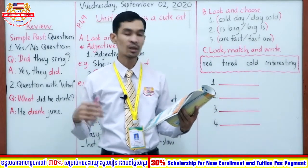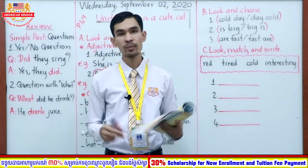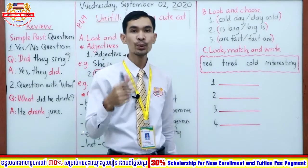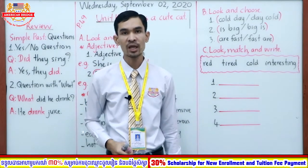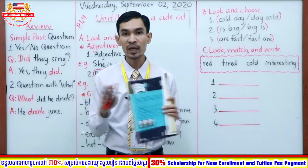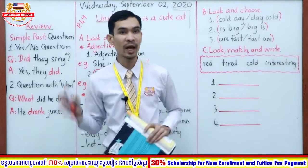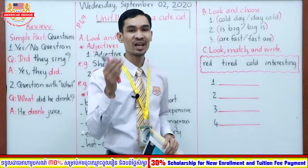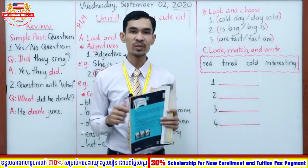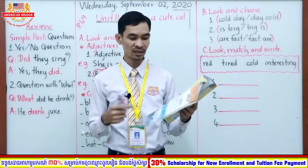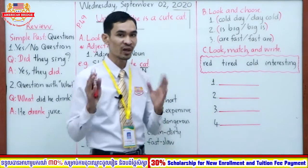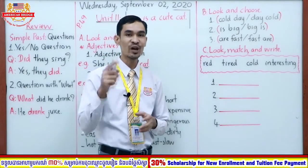Now you know the two adjective forms: one is adjective plus noun, and two is be plus adjective. You also know some common adjective pairs — adjectives usually have an opposite word. I hope you can remember all of these adjectives to practice the lesson. Let's continue to test your understanding with an exercise.